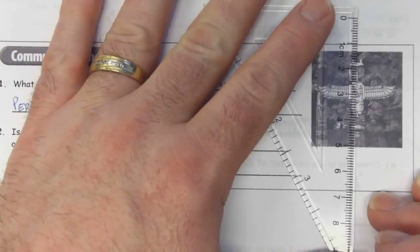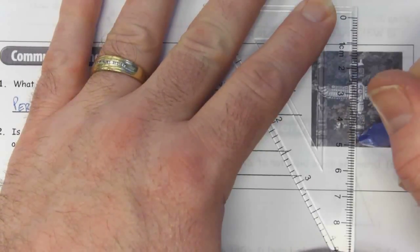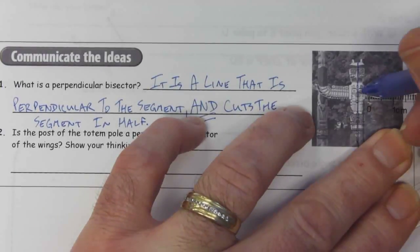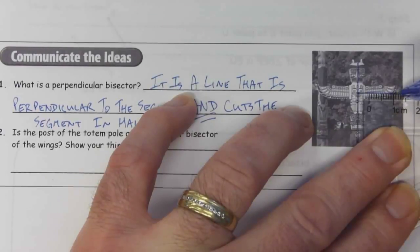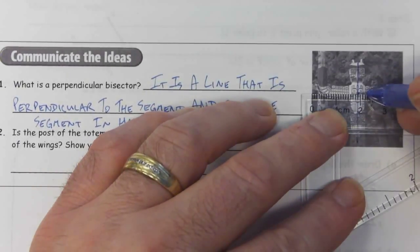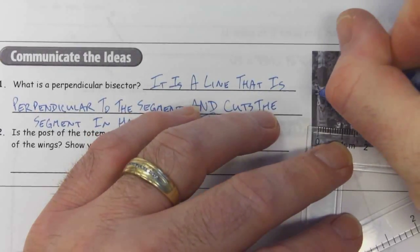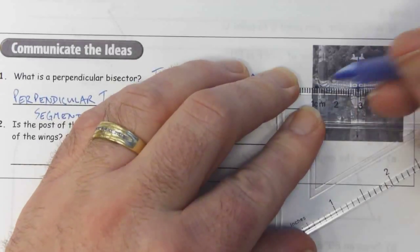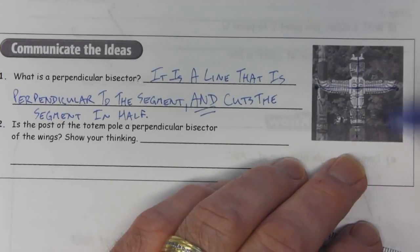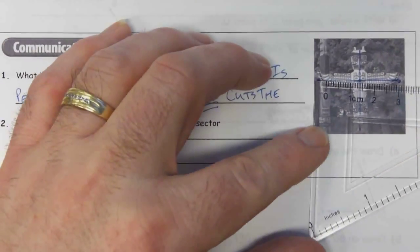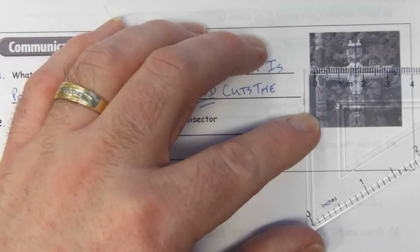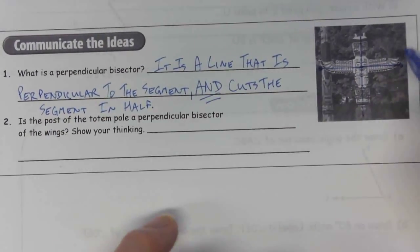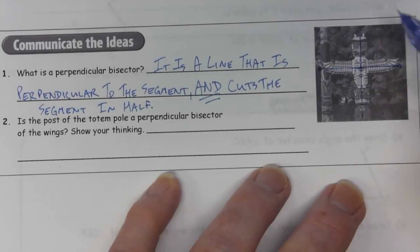We've got basically the center of the totem pole — this line here — and we've got wings here. We've got a point here and a point here at the outside of the wings. It does appear to be a 90-degree angle. If we measure the tip of the wing to that line, we're at 17 millimeters, and 17 millimeters on this side. So it is a 90-degree angle and both sides are the same length.